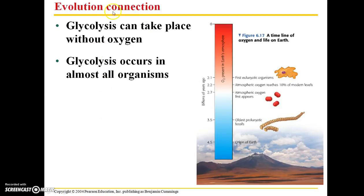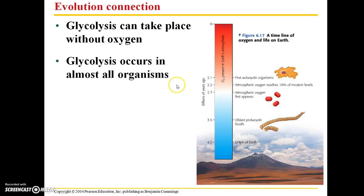Glycolysis can take place without oxygen. Because of that, it was basically the only way for cellular respiration to occur on this planet before the presence of an appreciable amount of atmospheric oxygen. Atmospheric oxygen didn't appear on the planet until about 2.7 billion years ago, and before that, between the oldest prokaryotic fossils and the appearance of atmospheric oxygen, those early organisms had to rely on glycolysis. Glycolysis occurs in almost all living organisms, and that attests to the fact that it evolved very early on our planet.